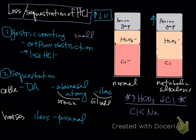The increase in bicarb with decrease in chloride is certainly the easiest to recognize. The chloride versus sodium comparison is a little more subtle — you can do the calculation or eyeball it.